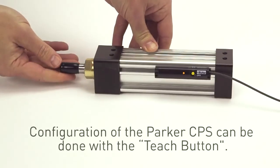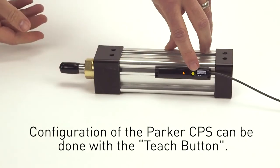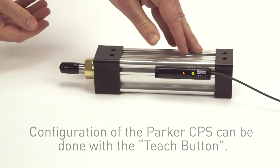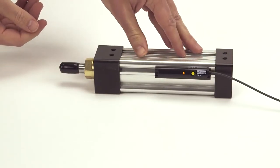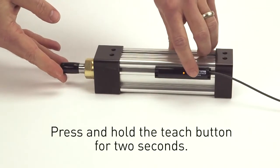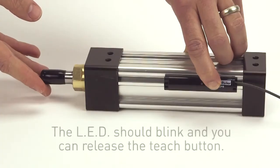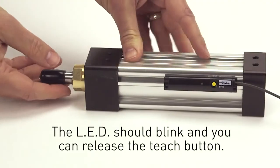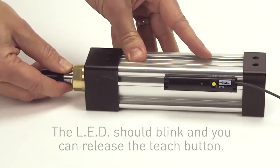Configuration of the Parker CPS can be done with the teach button for both analog and IO link part numbers. With the CPS properly installed and the piston in the zero position, press and hold the teach button for two seconds. The LED should blink and you can release the teach button. The zero point has been stored.